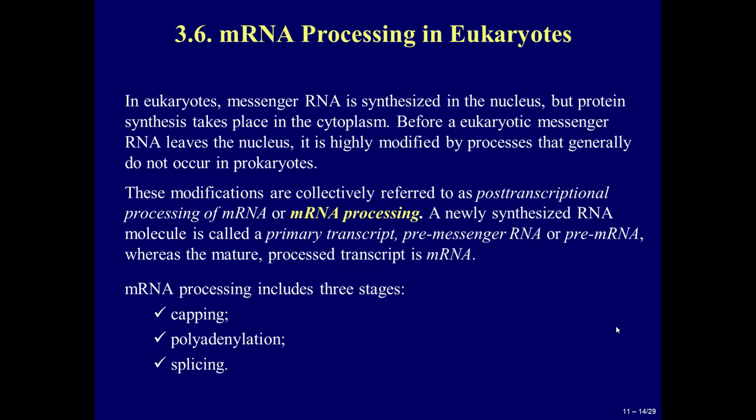Question 3.6: mRNA processing in eukaryotes. In eukaryotes, messenger RNA is synthesized in the nucleus, but protein synthesis takes place in the cytoplasm. Before eukaryotic messenger RNA leaves the nucleus, it is highly modified by processes that generally do not occur in prokaryotes. These modifications are collectively referred to as post-transcriptional processing of mRNA. A newly synthesized RNA molecule is called a primary transcript or pre-mRNA, whereas the mature processed transcript is mRNA. mRNA processing includes three stages: capping, polyadenylation and splicing.